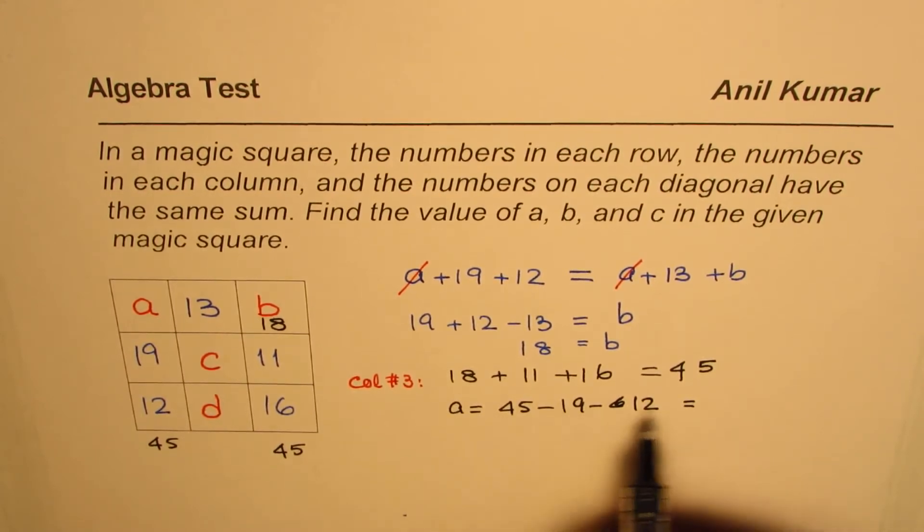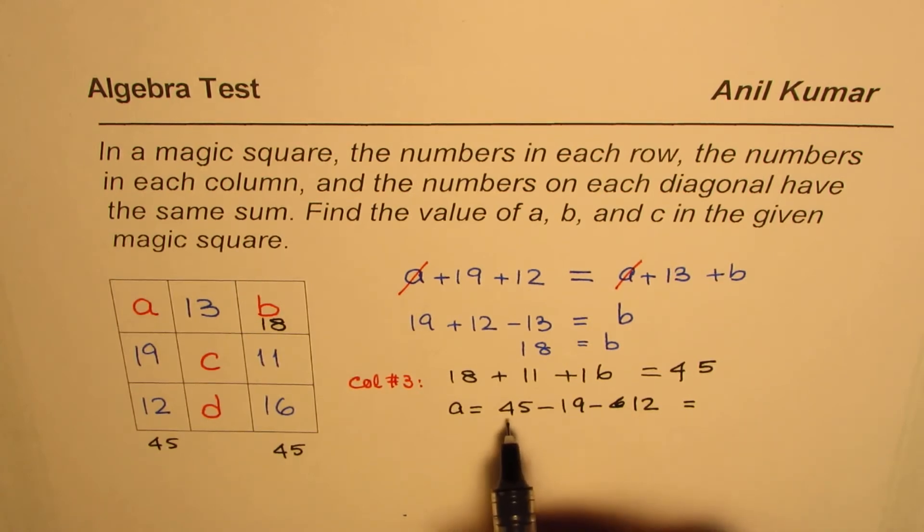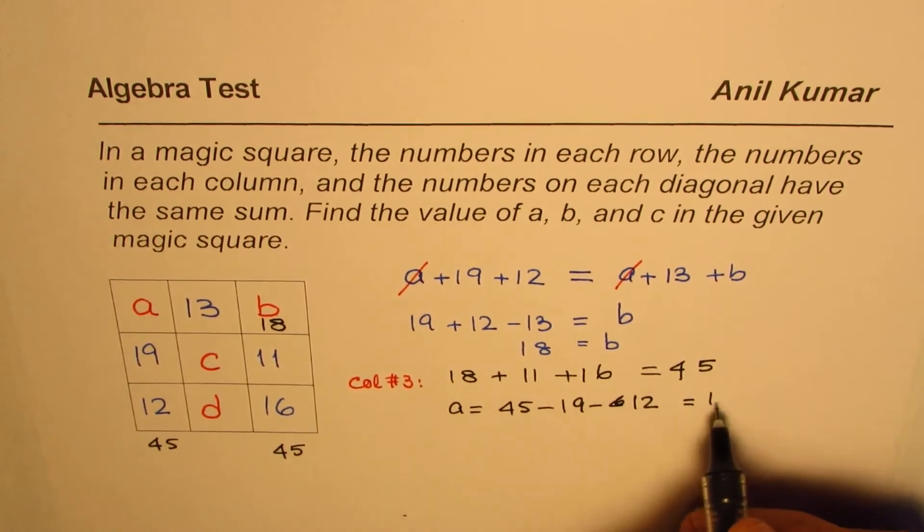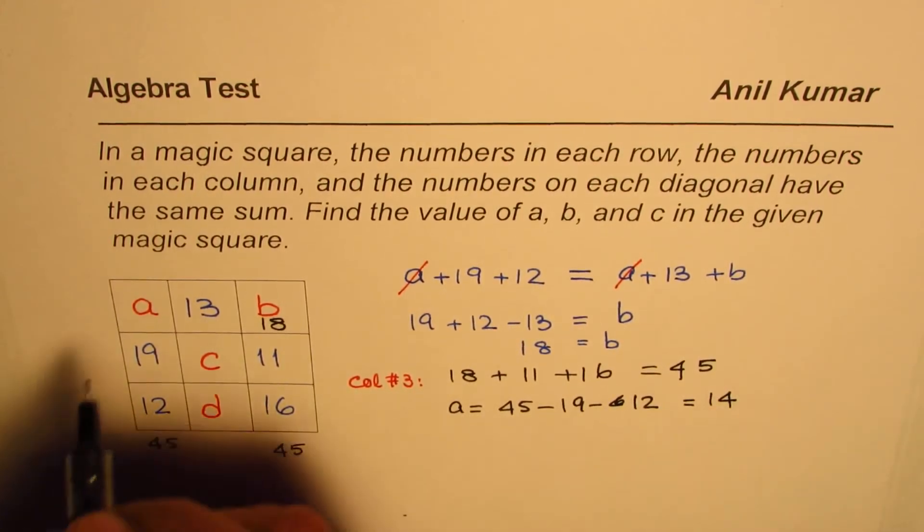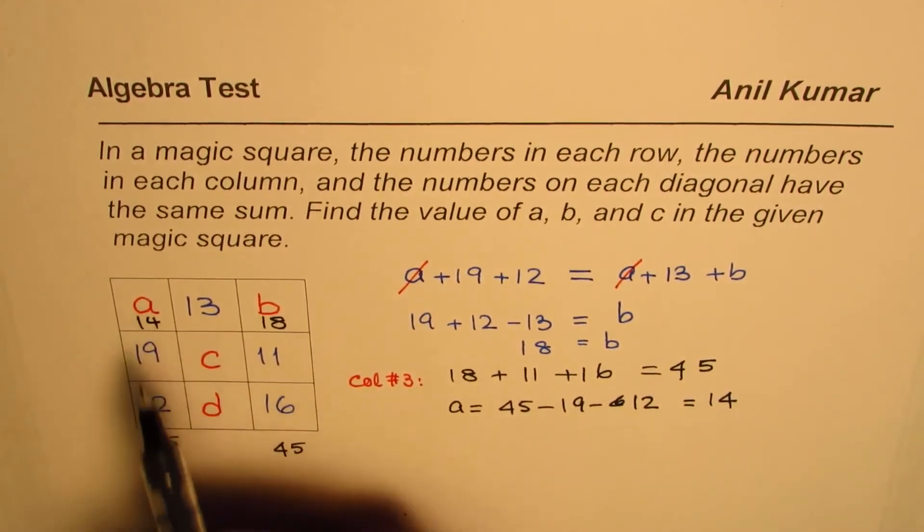45 take away 31. When we take away 31 from 45, we get 14. So the value of A is 14. You can check the result.